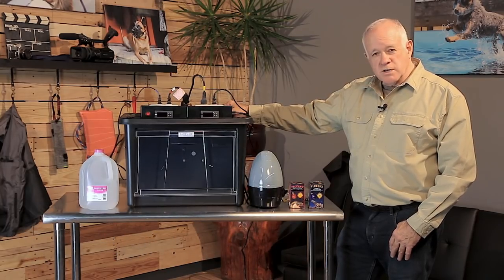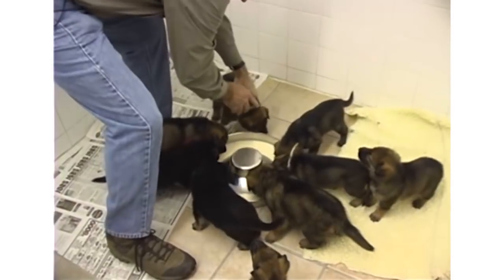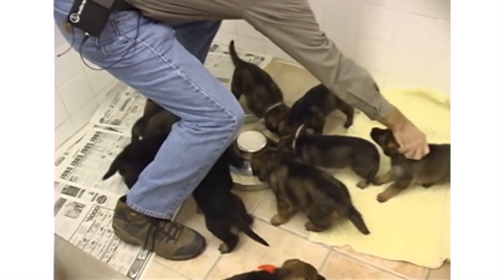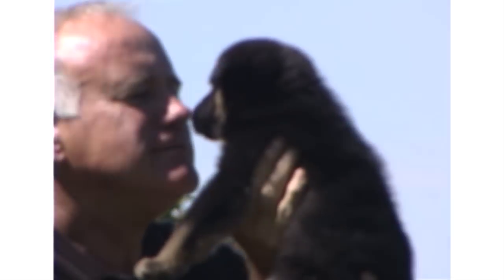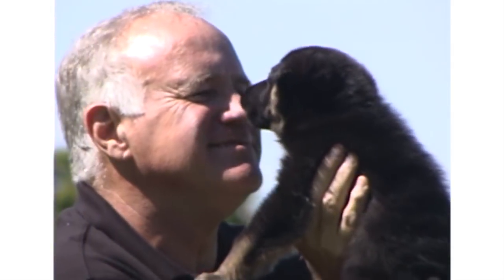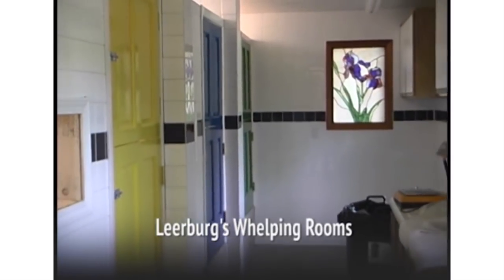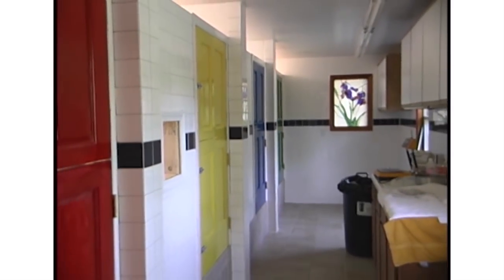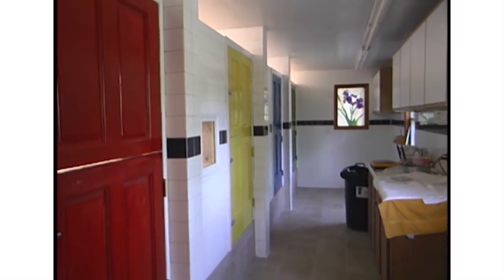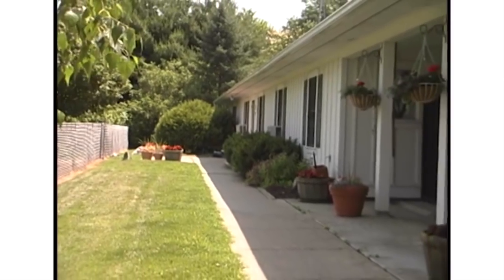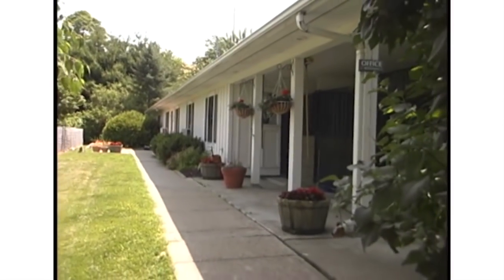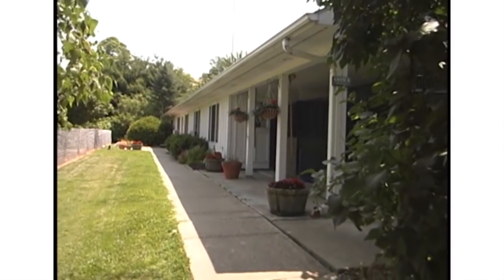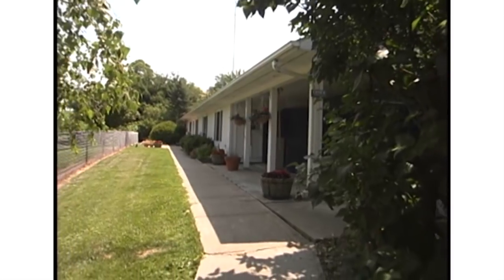I bred German Shepherds for over 35 years, a lot of them. I have a breeding facility where we have four whelping rooms. Our whelping rooms are state-of-the-art whelping rooms. They have ceramic tile on the walls, the floors. Each whelping room has its own drain, its own water source for hosing it down, and its own exhaust vent.